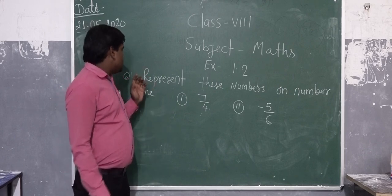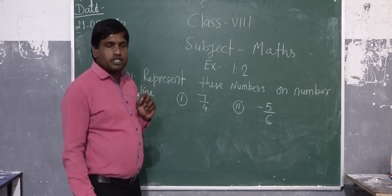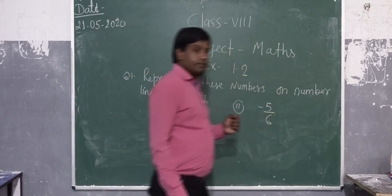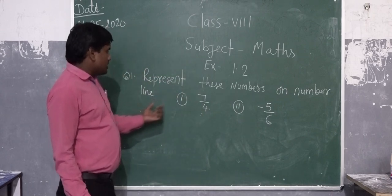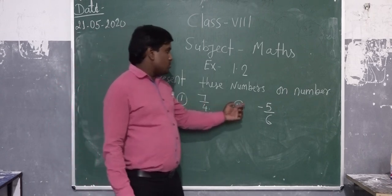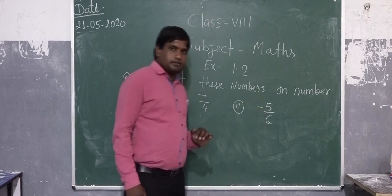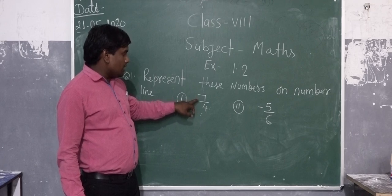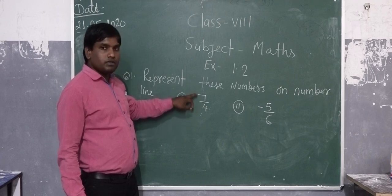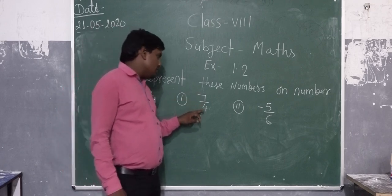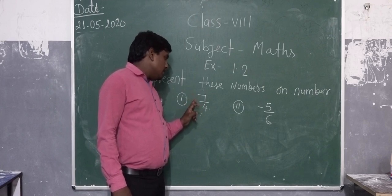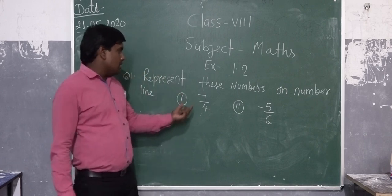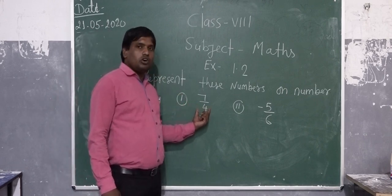Today I am going to start exercise 1.2, class 8 mathematics. We start from question number 1. The first question is to represent these numbers on the number line. First is 7 by 4 and second is minus 5 by 6. So 7 by 4 means this question is in the form of numerator and denominator, which means it is a rational number. We have to represent this rational number on the number line.